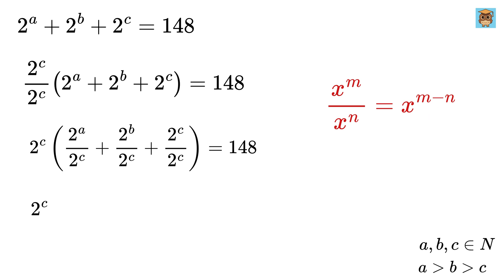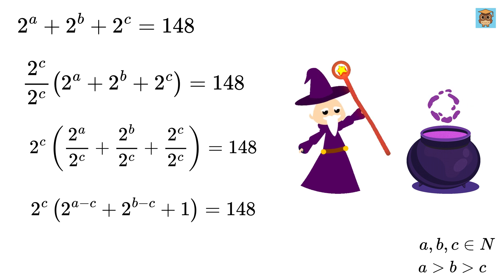So, we get this as 2 to the C times 2 to the A minus C plus 2 to the B minus C, plus this will simply be 1. Now, get ready for some magic.